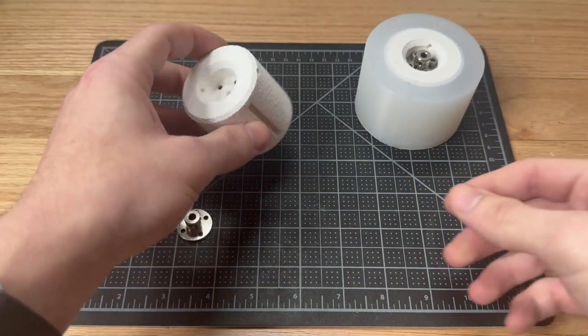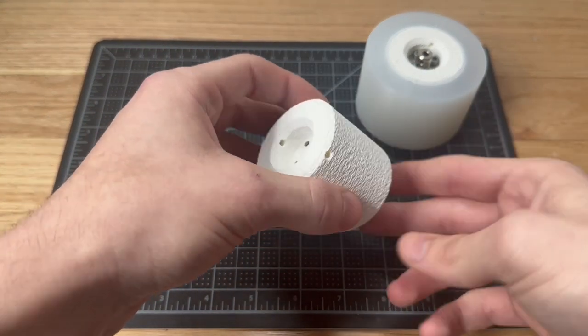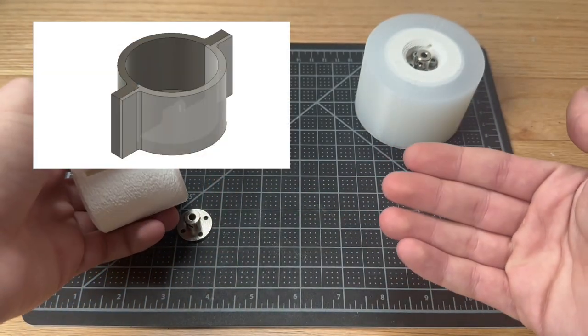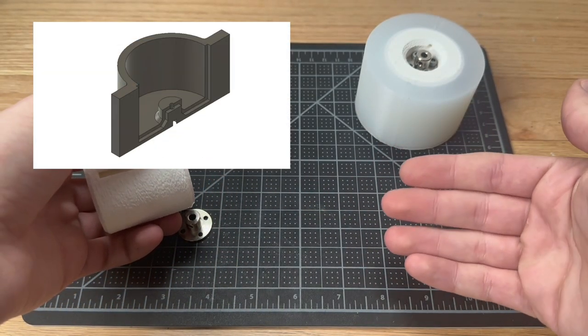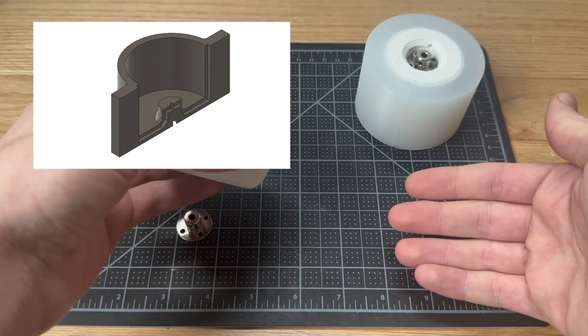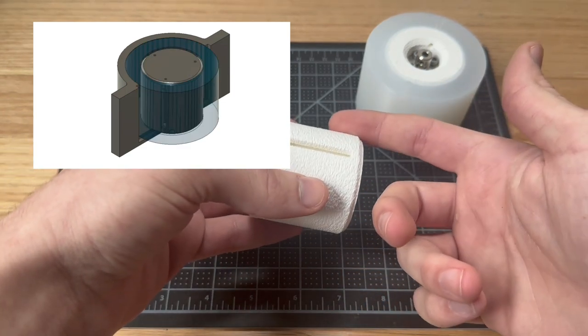The solution we came up with was to incorporate these little anchor points here. So this wheel was cast inside of a mold I unfortunately don't have right now, but I'll put a photo of it up on the screen and you'll also see it later in the video when I show you all how we made the wheel. But essentially, the silicone is poured into this mold around this core.